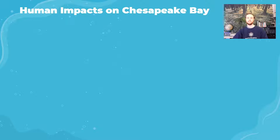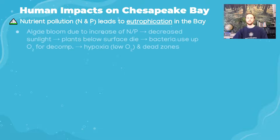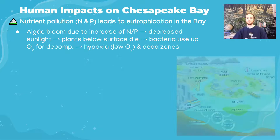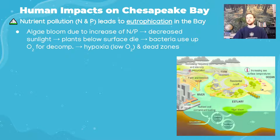A major human impact on the Chesapeake Bay is nutrient pollution — excess nitrogen and phosphorus entering a body of water, leading to eutrophication. Eutrophication is when an algae bloom occurs due to these excess nutrients. Nitrogen and phosphorus are often limiting nutrients, so adding excess amounts causes an explosion of algae growth, which blocks sunlight so that plants beneath the surface can't photosynthesize.